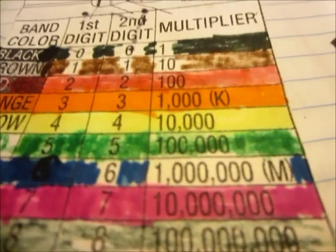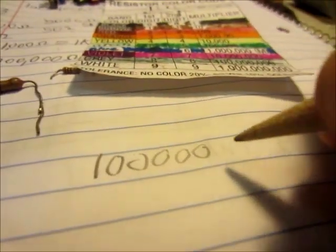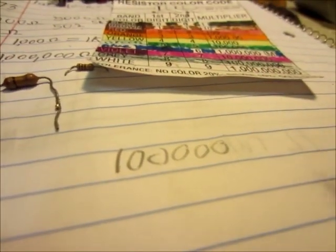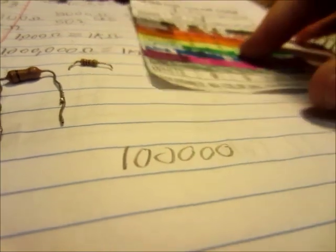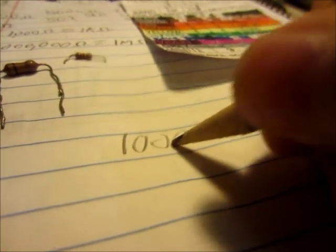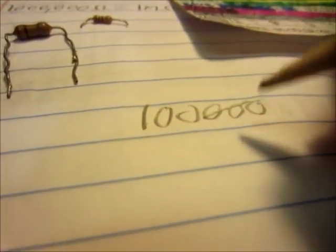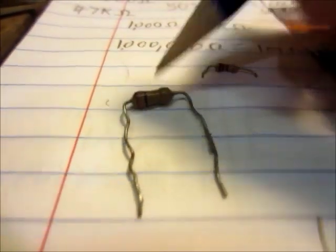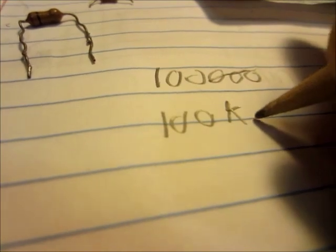So we have 1, 0, and then 1, 2, 3, 4 zeros. That's how many ohms it is. If we want to change that to kilohms, we just take 3 zeros off. This one is a 100 kilohm resistor.